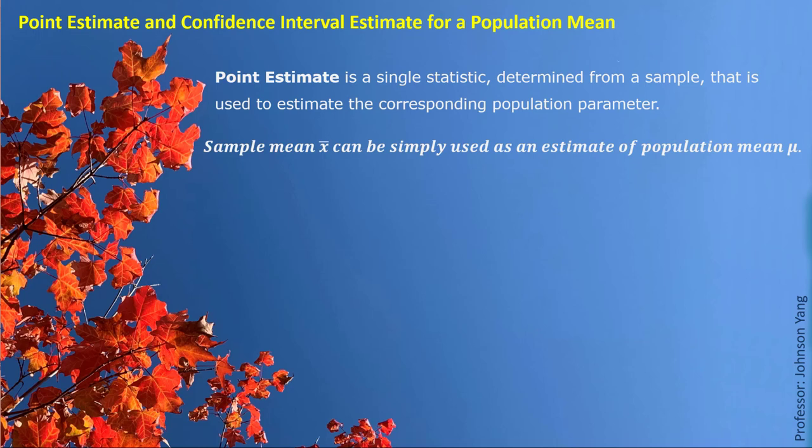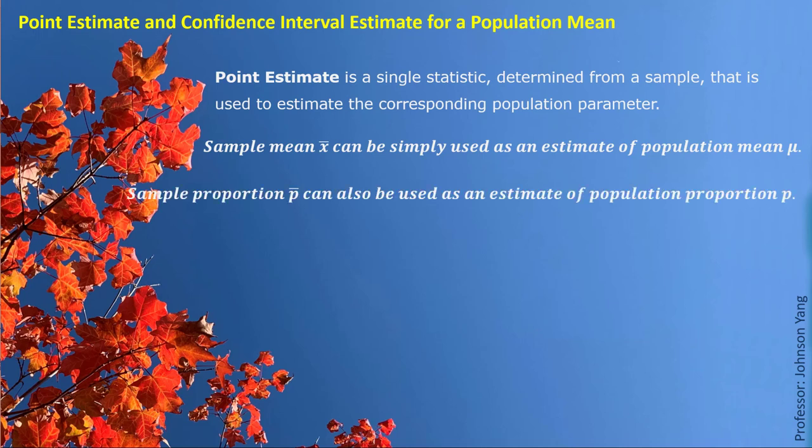We have seen this kind of result when we were doing sampling distribution. If we randomly pick up a sample from a population, we can get a sample mean from the sample data, and then use this sample mean to represent the population mean. Similarly, we can also calculate the proportion for an interested focus group in the sample, and use this proportion as an estimate of the corresponding population proportion.